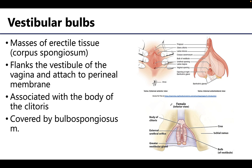The vestibular bulbs are also composed of erectile tissue, specifically corpus spongiosum, and lie on either side of the vestibule. They attach to the perineal membrane and the anterior ends taper, attaching to the clitoris by two slender bands of erectile tissue. The vestibular bulbs are covered by the bulbospongiosus muscle. When these erectile tissues become engorged with blood, this causes changes to the vestibule and exerts pressure on the neighboring clitoris.